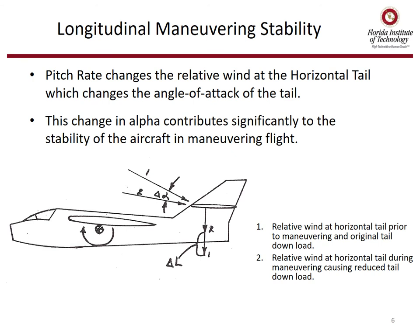As we start to have pitch rate on the aircraft, it changes the relative wind seen by the horizontal tail compared to the angle of attack on the main wing. This change in alpha contributes significantly to the stability of the aircraft in maneuvering flight. In the diagram, position one is the relative wind at the horizontal tail prior to maneuvering and the original tail download. Position two shows the relative wind at the horizontal tail change during maneuvering, causing a reduced tail download.